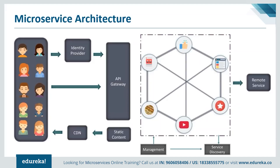The API Gateway acts as an entry point for all client requests and passes the request to the specific microservices to be processed. Apart from the main components, the architecture has other parts such as static content, which houses all the content from the system; service discovery, which acts as a guide to find the road of communication between microservices; and content delivery networks, which is basically a distributed network of proxy servers and their data centers.